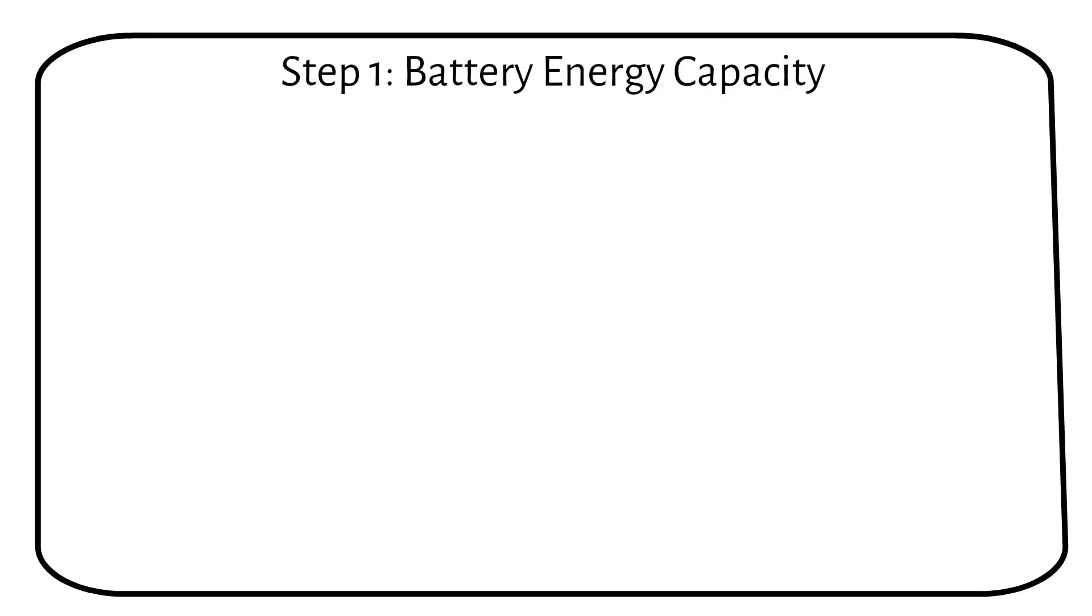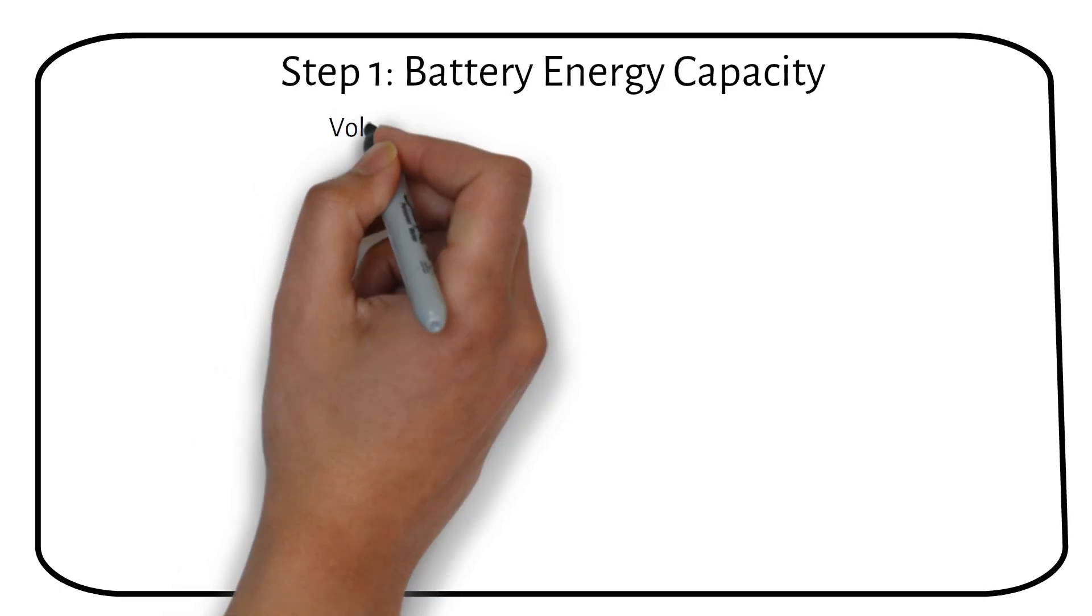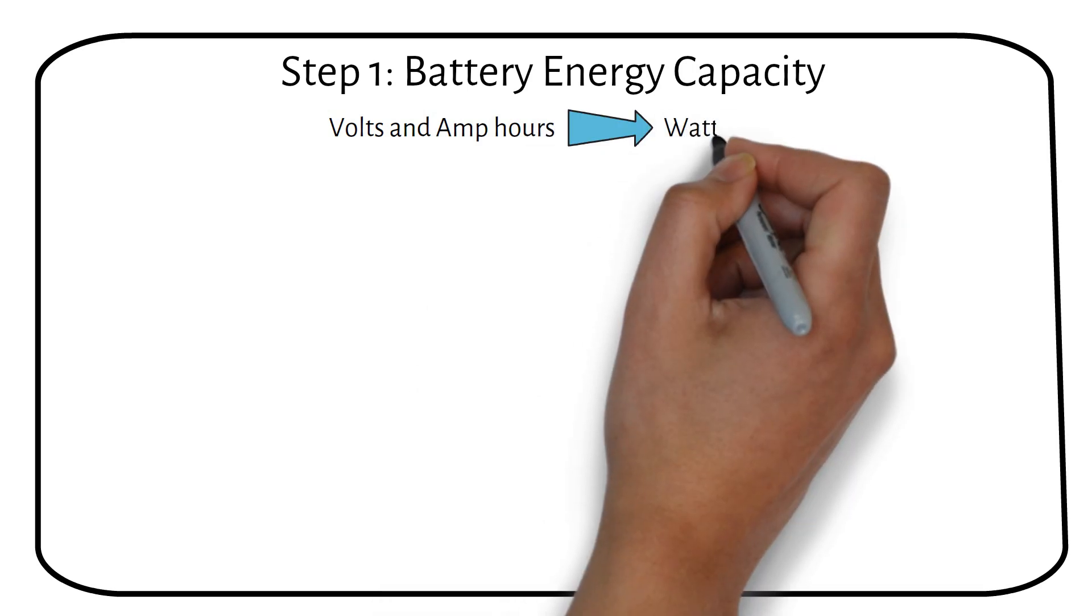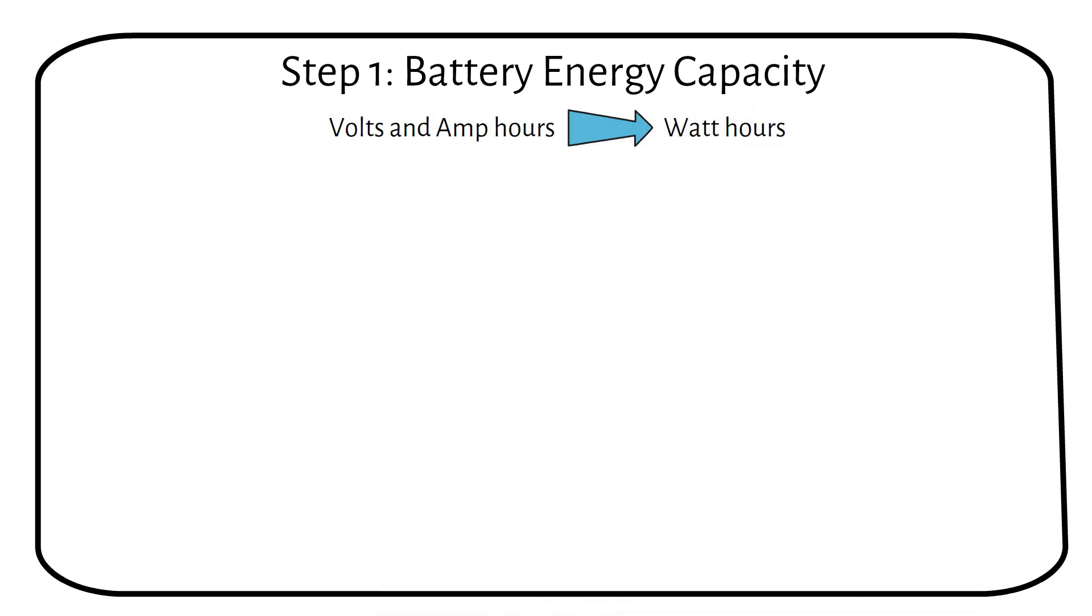First, we will need to convert our battery's capacity from volts and amp-hours to watt-hours. Watt-hours measure the amount of stored energy in a battery, independent of voltage. So you can use these calculations for 24 and 48V batteries as well. Understanding this will be crucial for the next steps.